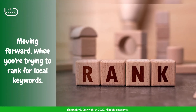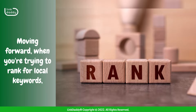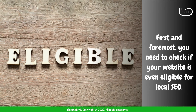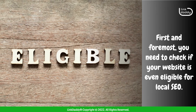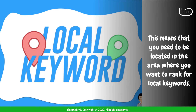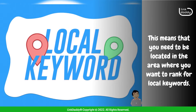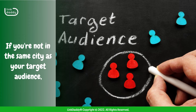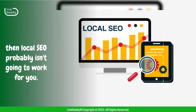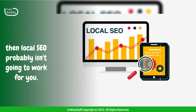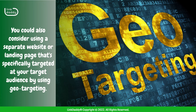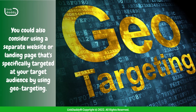Moving forward, when you're trying to rank for local keywords, there are a number of factors that come into play. First and foremost, you need to check if your website is even eligible for local SEO. This means that you need to be located in the area where you want to rank. If you're not in the same city as your target audience, then local SEO probably isn't going to work for you. You could also consider using a separate website or landing page that's specifically targeted at your audience by using geo-targeting.